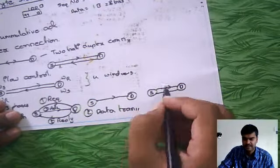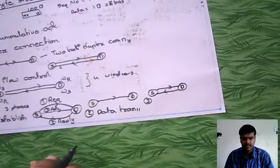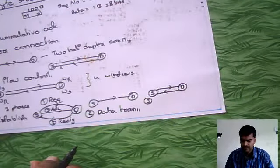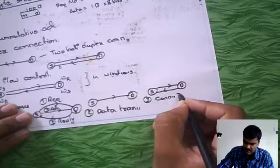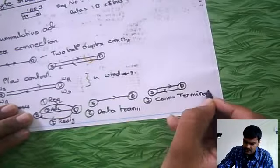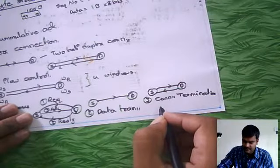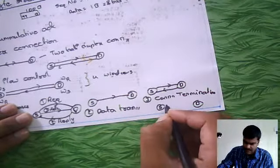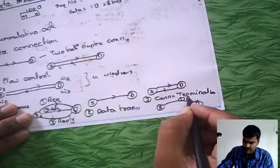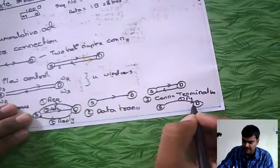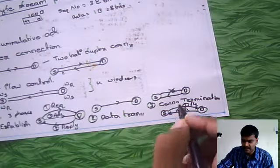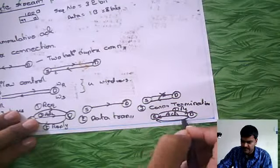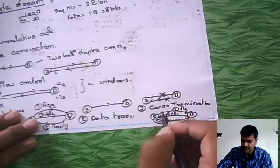Then, coming to the third phase — after talking with each other, we are going to cut the connection. That is the connection termination phase. The source will request the connection to terminate. The destination will give an acknowledgement, and that connection is lost — one connection is lost. After that, if the destination also wants to terminate its connection, it does the same steps, gives an acknowledgement, and that connection is also lost.